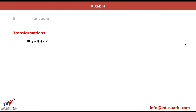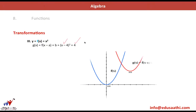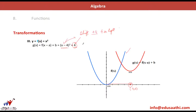The third transformation combines both. We apply the inside shift and the outside shift together. Since it is a minus inside, the graph first shifts four places to the right — the minima moves there. Then applying the plus outside, the minima shifts upwards by four points. So for f(x) = (x - a)² + b, the graph is drawn by applying both shifts to the original graph of f(x) = x².